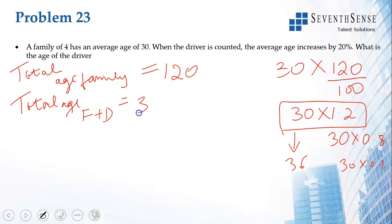Total age of family plus driver equals 36 times 5, which equals 180. With four people it was 120, with five people it's 180. This increase in total age happened only because of the fifth person, the driver. So driver's age is 180 minus 120, which means the driver is 60 years old.